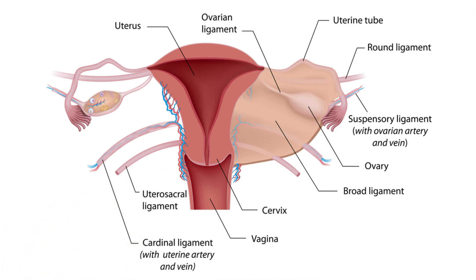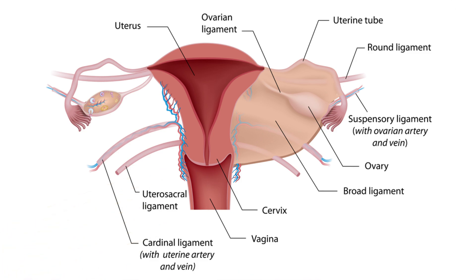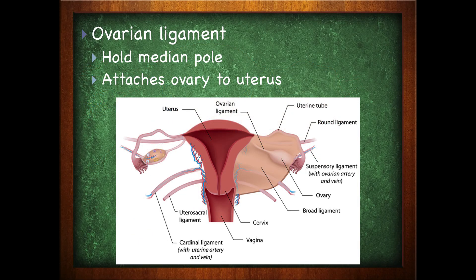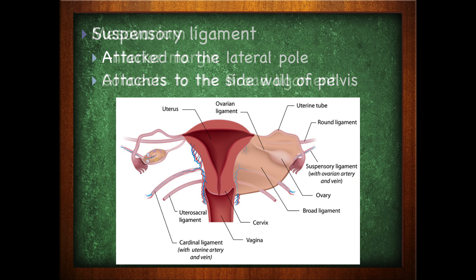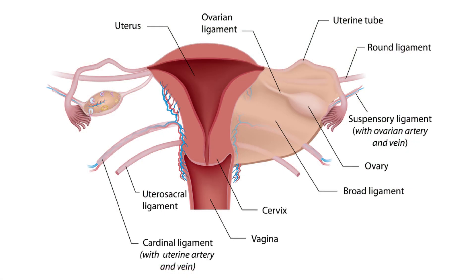When you take a look at the ovaries, they're held in place and supported by different structures. Connective tissues hold them where they should be. We have the ovarian ligament, which holds the median pole and attaches the ovaries to the uterus. We have the suspensory ligament, which attaches to the lateral pole and to the sidewall of the pelvis. Then we have the broad ligament — which is very broad — and attaches to the anterior margin.